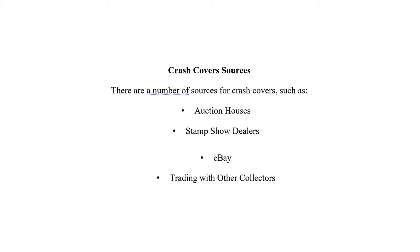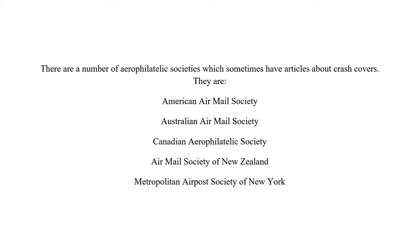People ask where you can find crash covers. Sources include auction houses, stamp dealers, eBay — which has quite a lot — and trading with other collectors, which is where I've gotten many of mine. A number of societies have articles about crash covers and collectors, primarily the American Airmail Society, the Australian Airmail Society, the Canadian Air Mail Society, and the Airmail Society of New Zealand. There's also a New York area society called the Metropolitan Airpost Society. Anyone interested in the Wreck and Crash Mail Society can email me at kaaerophil at gmail dot com.